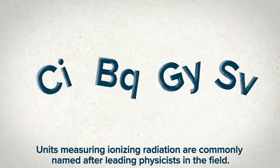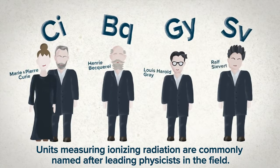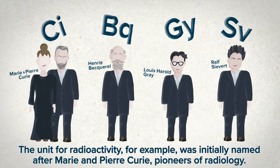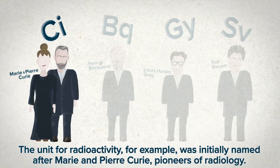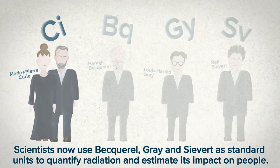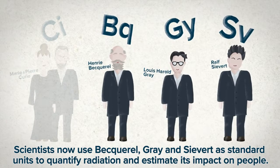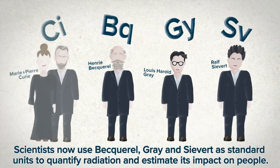Units measuring ionizing radiation are commonly named after leading physicists in the field. The unit for radioactivity, for example, was initially named after Marie and Pierre Curie, pioneers of radiology. Scientists now use Becquerel, Gray, and Sievert as standard units to quantify radiation and estimate its impact on people.